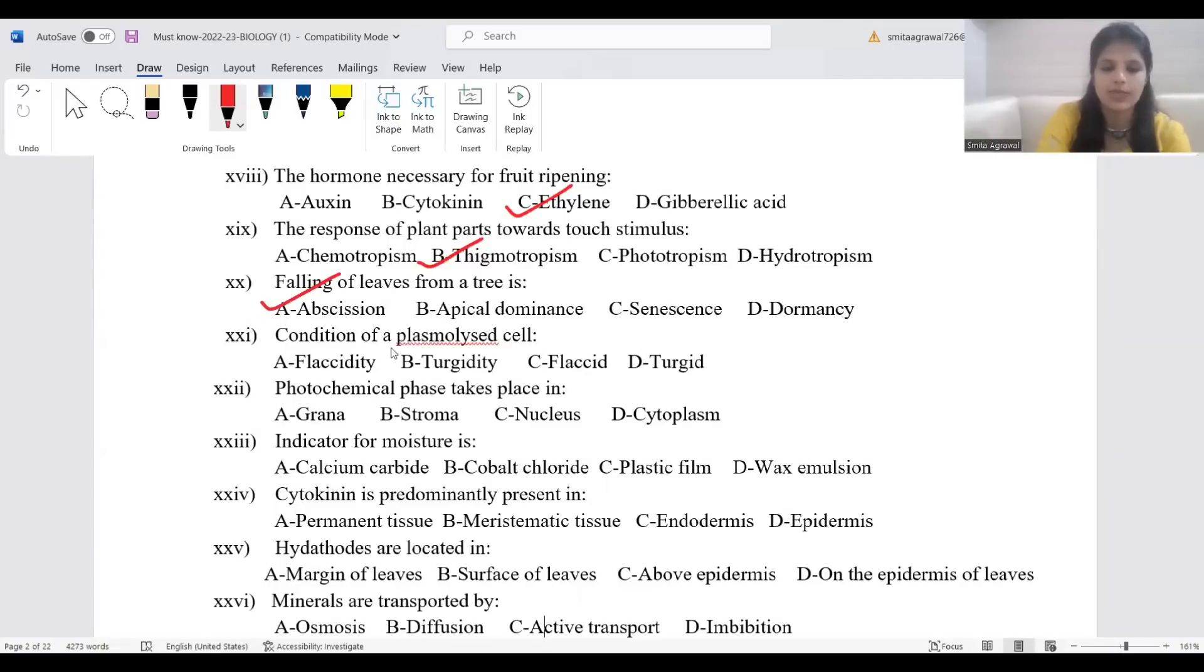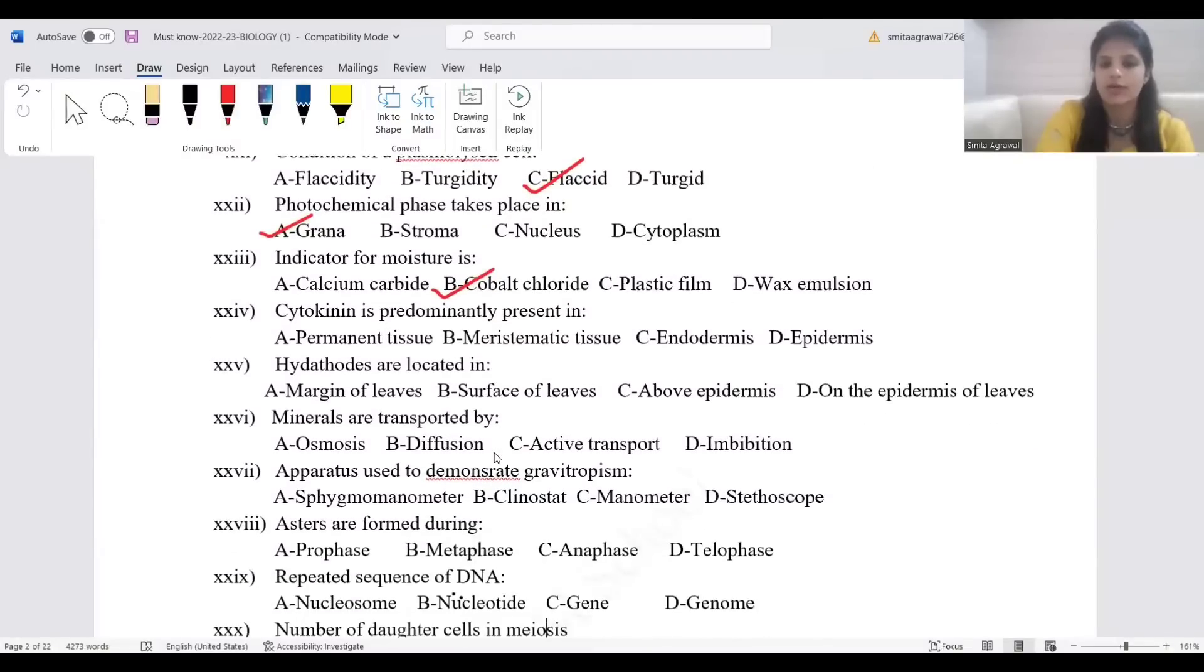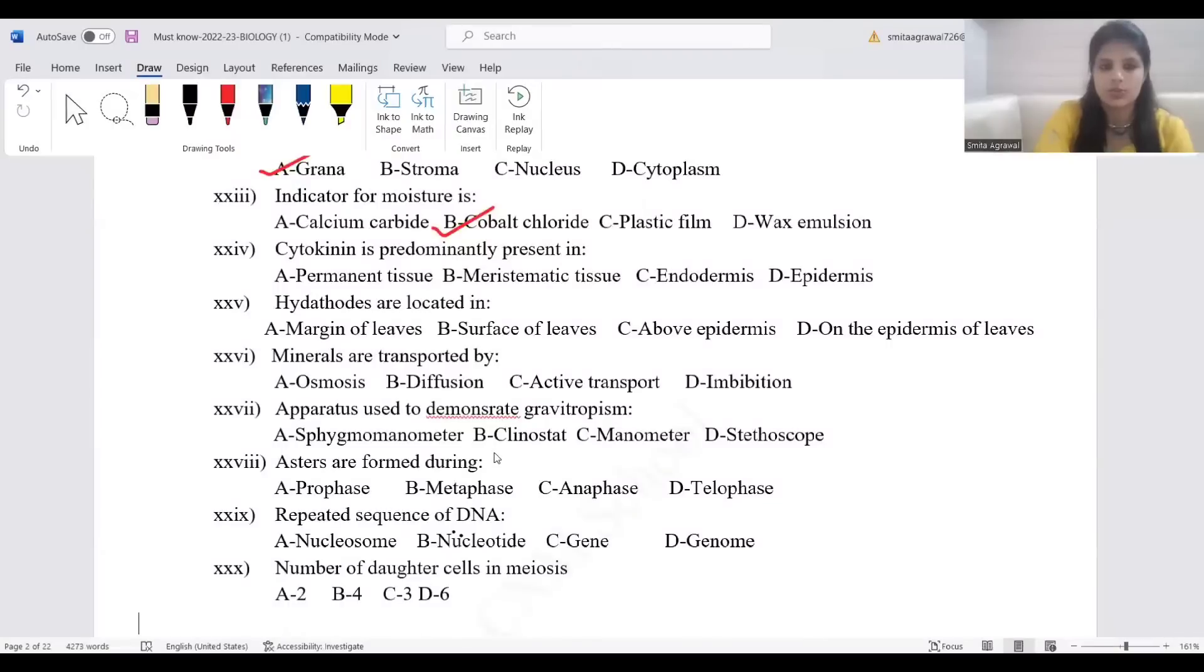Condition of a plasmolyzed cell: the condition is flaccid. Photochemical phase occurs in grana. Stroma is for dark phase. Indicator for moisture is cobalt chloride paper. You use dry cobalt chloride paper to show that moisture or water vapors are released during transpiration.